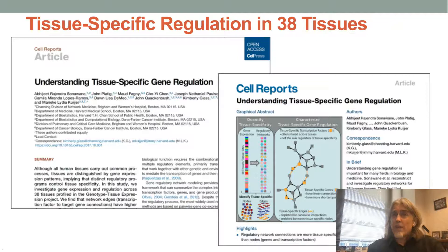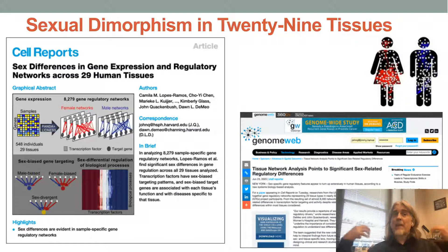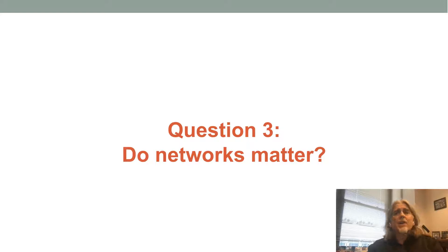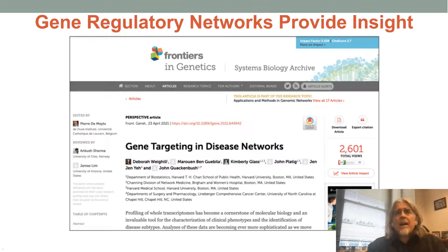The Lioness method has been used in a wide variety of different problems. Some of those include looking at tissue-specific regulation in 38 different tissues using data from GTEx, and then in 29 of those tissues where we had male and female samples, addressing this understudied problem of what the differences are between the sexes in terms of the processes that drive phenotype. The third question we wanted to address is: do networks actually matter? Do they give us something beyond what we can understand by simply exploring differential expression?